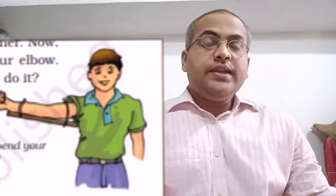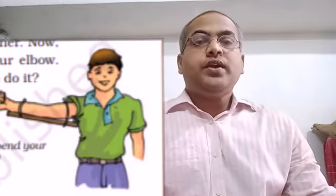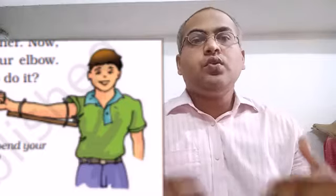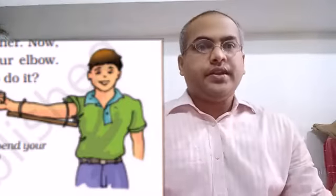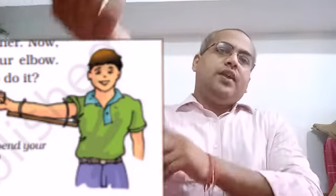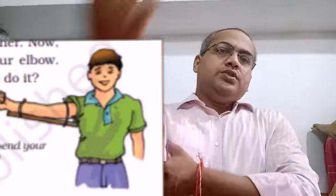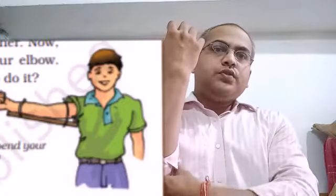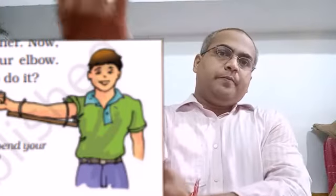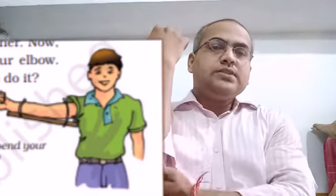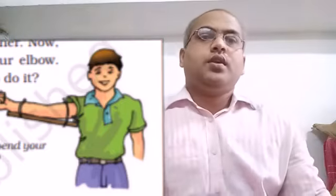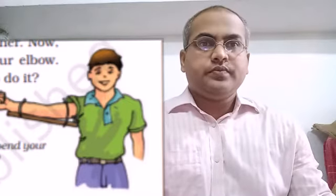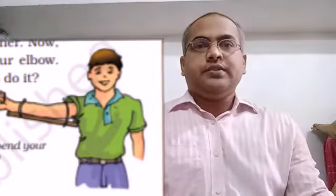First of all, what is a joint? A joint is a place where two or more bones are connected. For example, our elbow — here one long bone from the upper arm and two bones from our forearm are connected. This is called a joint.